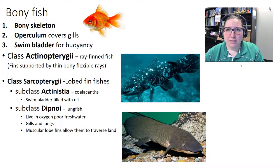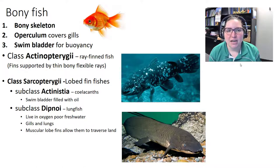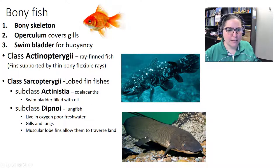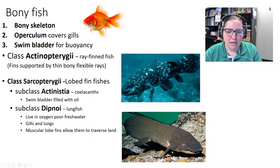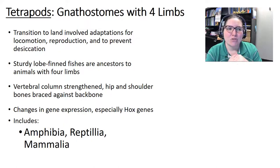Bony fish have a bony skeleton, an operculum covering their gills, and a swim bladder for buoyancy. The general term is Osteichthyes, but there are two classes: Actinopterygii (ray-finned fishes like a goldfish) with thin fins, and Sarcopterygii (lobe-finned fishes) with thicker, more muscular fins. Sarcopterygii includes coelacanths and lungfish, which can live in oxygen-poor freshwater using both gills and lungs, and their muscular fins allow them to traverse land.